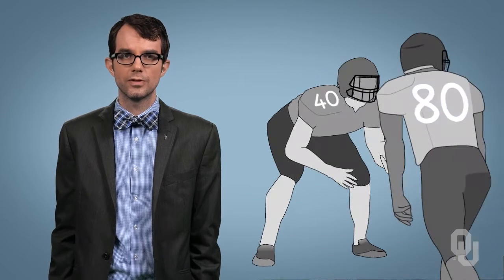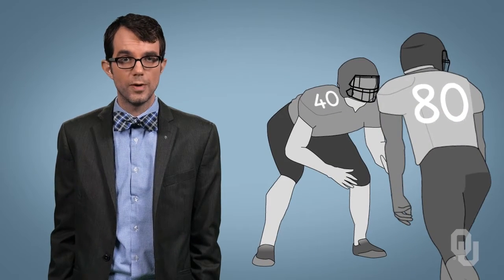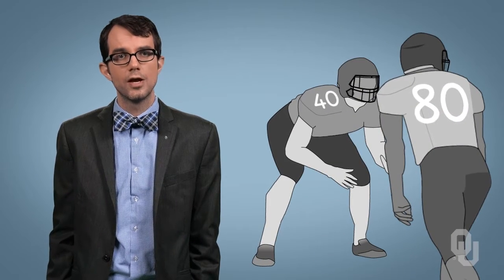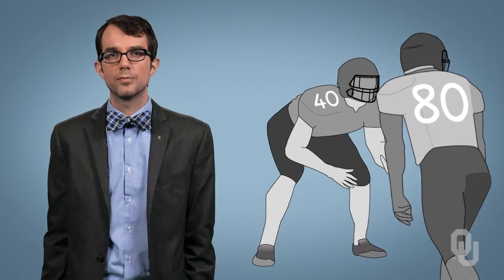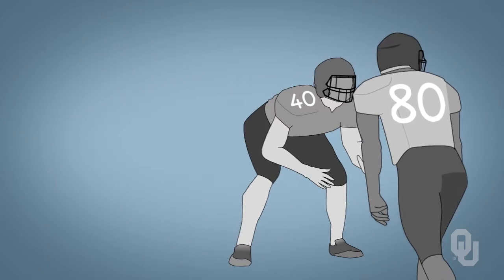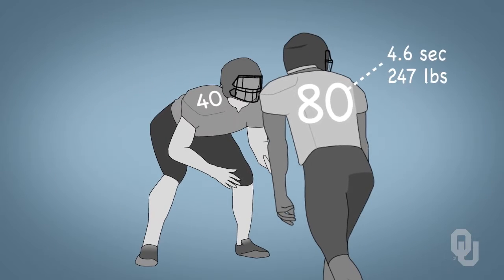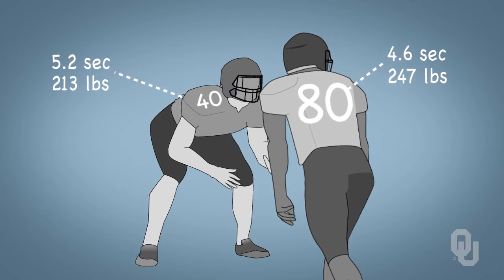But the same arithmetic operation — 40 times 2 equals 80 — makes no sense with football jersey numbers. Those are still numerical values, but mathematical operations make no sense. If you take half the speed or half the weight of the player wearing 80, you don't get the player wearing 40. This is a straightforward example, but there are other cases where folks often make this mistake.